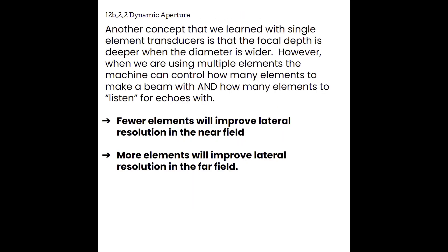Another concept from single element transducers is that focal depth is deeper when the diameter is wider. With multiple elements, the machine can control how many elements to use for transmitting and listening — this is a dynamic aperture, meaning a changeable hole for creating the beam and receiving echoes. Fewer elements improve lateral resolution in the near field for shallow imaging; more elements improve lateral resolution in the far field. The machine looks at the maximum depth being used and adjusts the number of active elements to optimize lateral resolution accordingly.